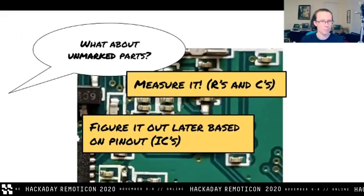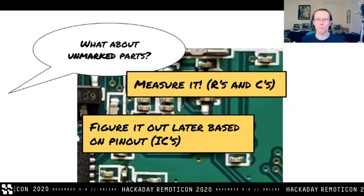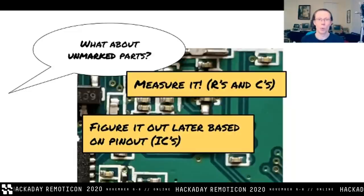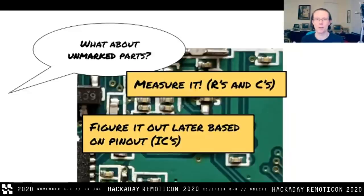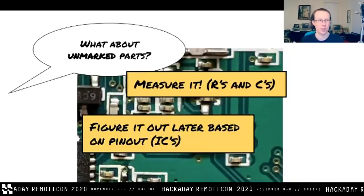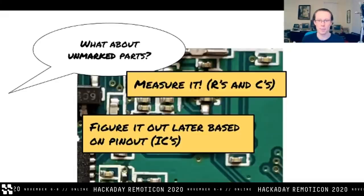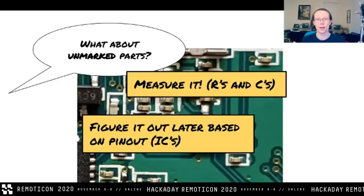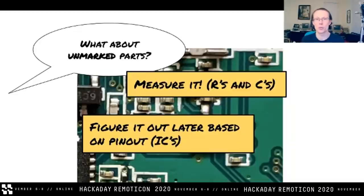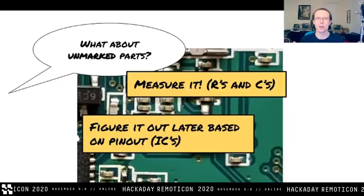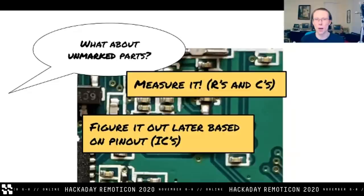Depending on your board, there may be components with no markings at all. A common example is most surface mount ceramic capacitors have no marks on them. What you can do is desolder it and then measure the capacitance with a multimeter that has a capacitance checker mode, or use a fancier LCR meter for a more accurate reading. Resistors — a lot of them do have marks, but really small ones do not, and you'll have to take those out of the circuit and measure them. Many component datasheets include typical application circuits with recommended component values, which can help you figure out probable values.